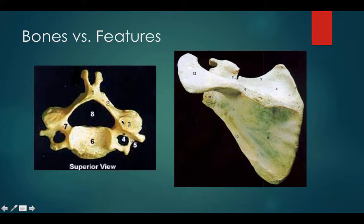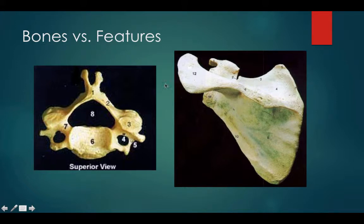On the left-hand side we have a picture of a cervical vertebrae. Labeled number one is the spinous process. So if you were asked on a quiz what bone this is, you would say the cervical vertebrae. If they asked you what feature number one is, you would say the spinous process. On the right-hand side we have a picture of the scapula. The scapula would be the bone. Number twelve would be a feature — the acromion process.